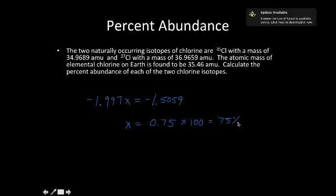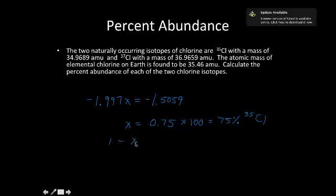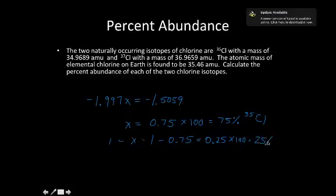X was the percent abundance for chlorine-35, so that's 75%. The percent abundance for chlorine-37 was expressed by 1 minus X. So 1 minus 0.75 equals 0.25, and multiplying by 100 gives 25%. That is the percent abundance for chlorine-37.